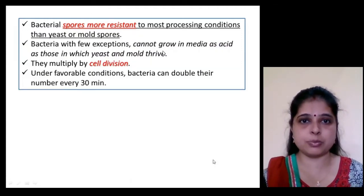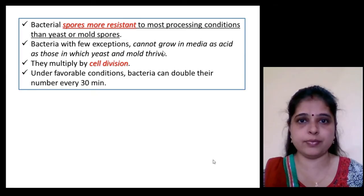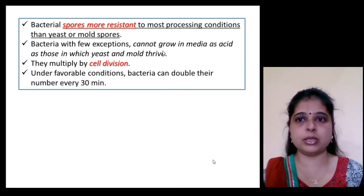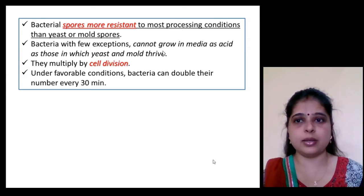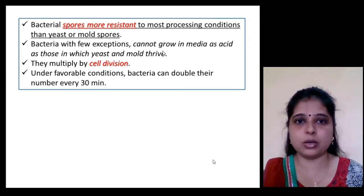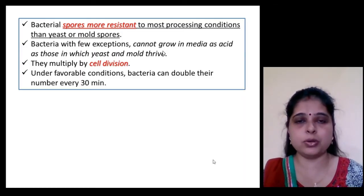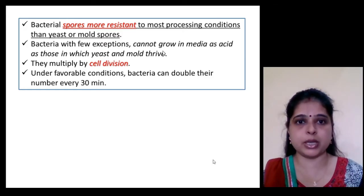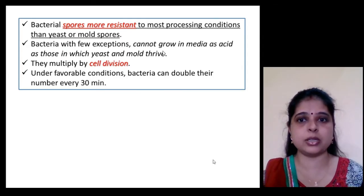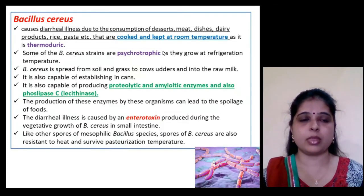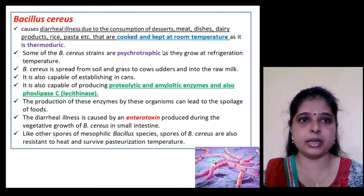Bacterial spores are more resistant to processing conditions and cannot grow in highly acidic media — bacteria generally grow in low-acid food, with some exceptions, while yeast and molds grow in high-acid conditions. Bacteria multiply by cell division, and under favorable conditions double their number every 30 minutes.